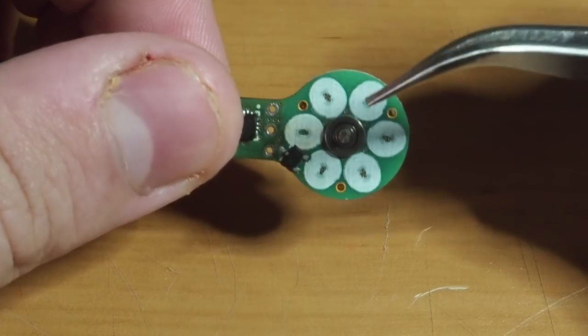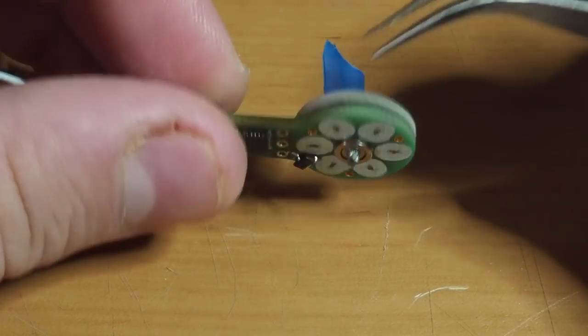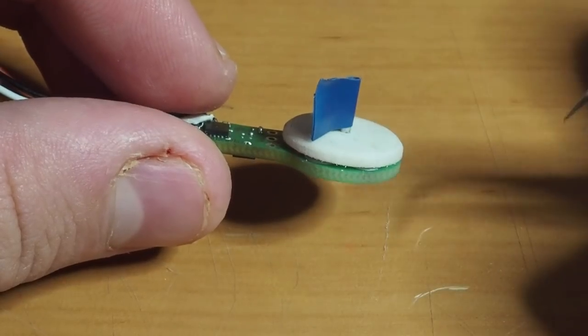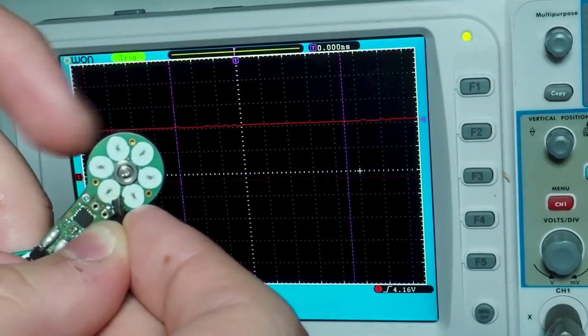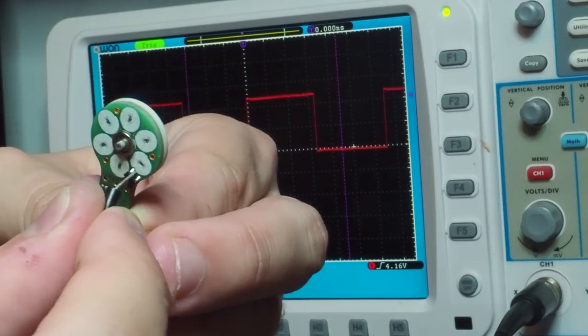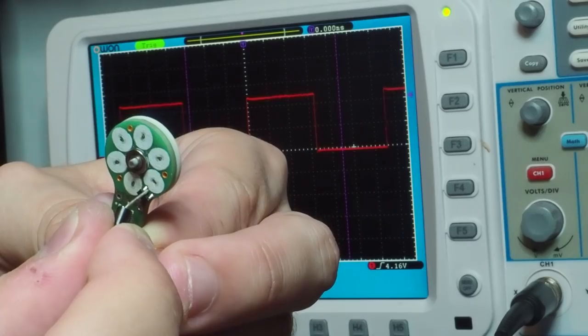So what I did is just place the Hall sensor just underneath the rotor's magnets. On every quarter rotation the rotor makes, it will sense a change in magnetic polarity, so the microcontroller can determine the speed by measuring the time it takes to go from one pole to another.